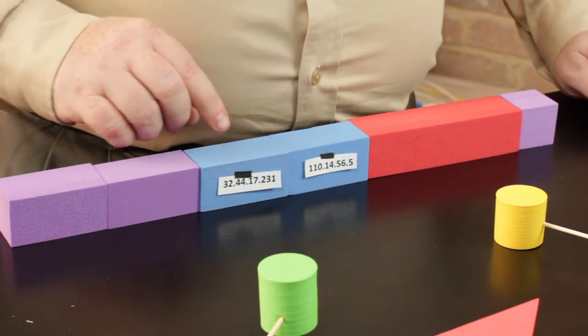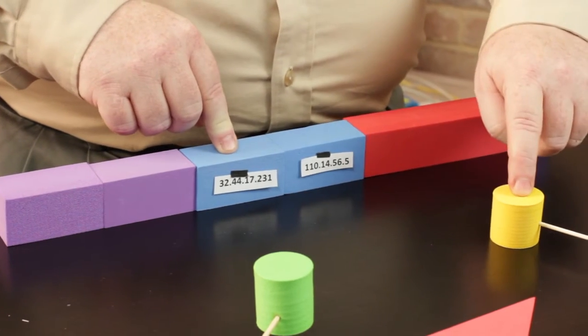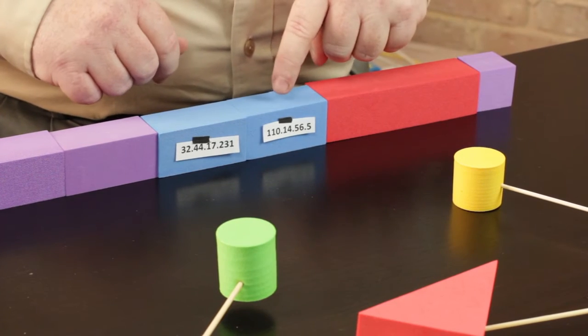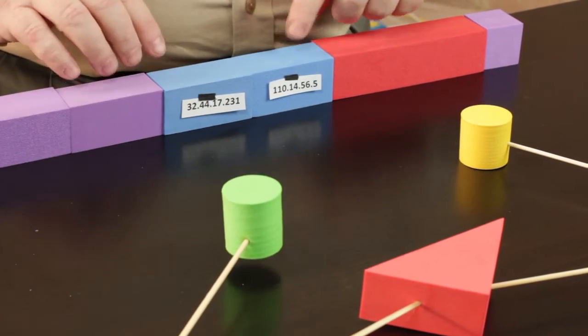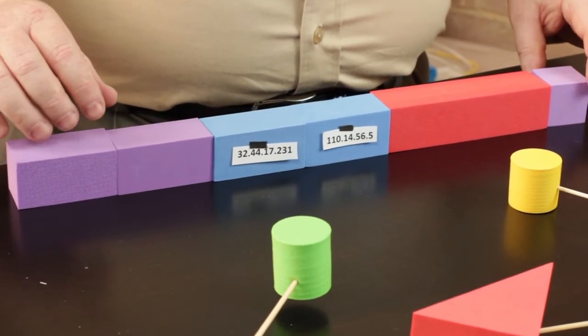What we're putting in is the IP address of this computer right here, this is the destination IP address, as well as the source IP address, which is the IP address of the sending system. So we have something that looks kind of like this.